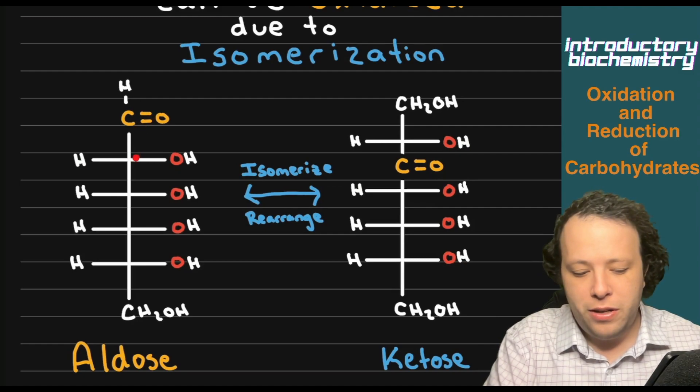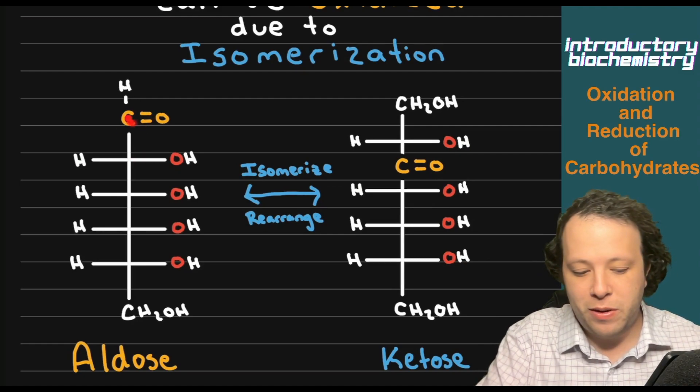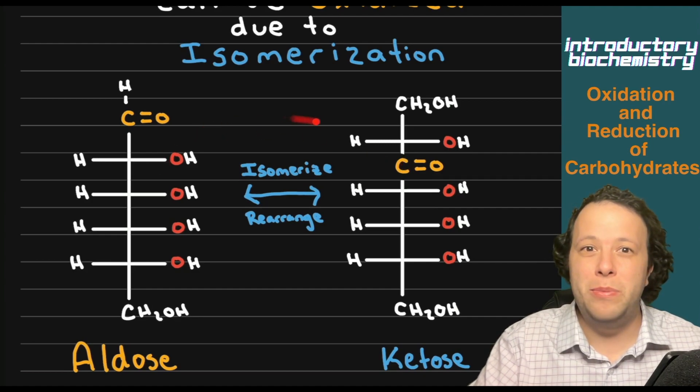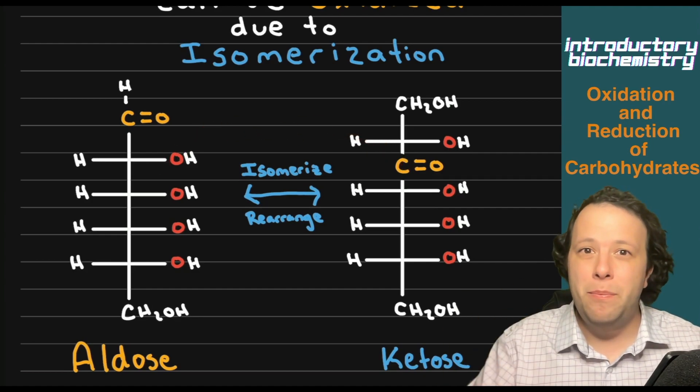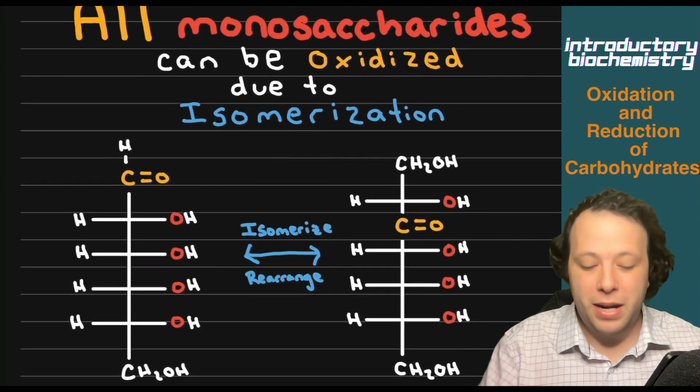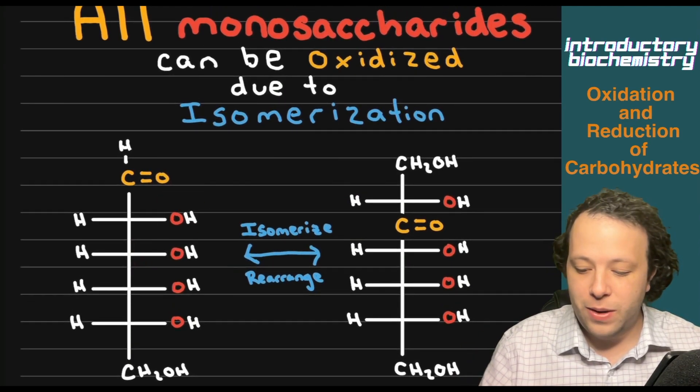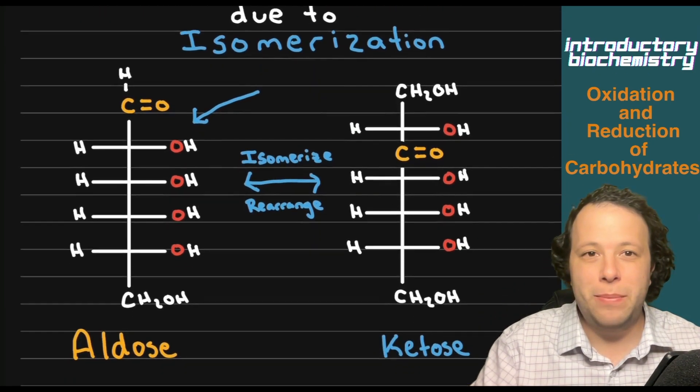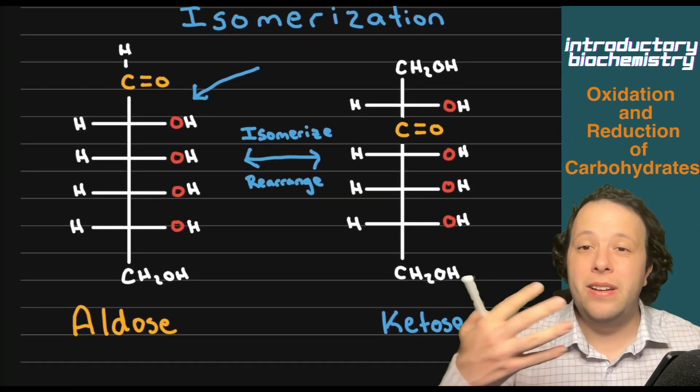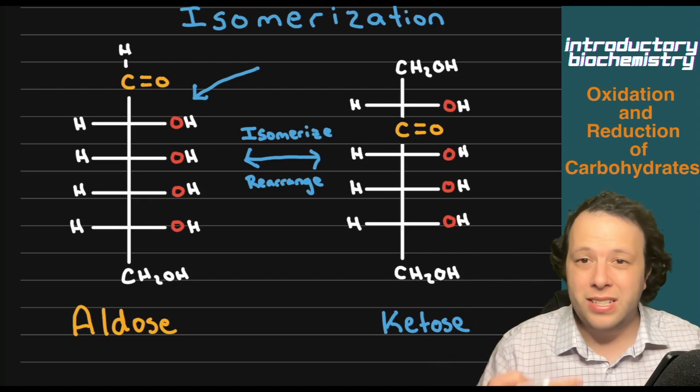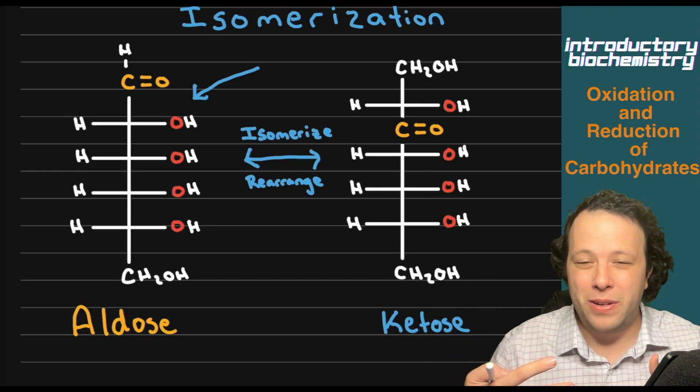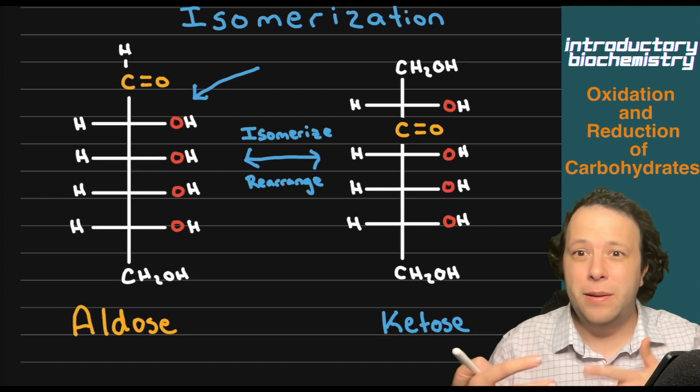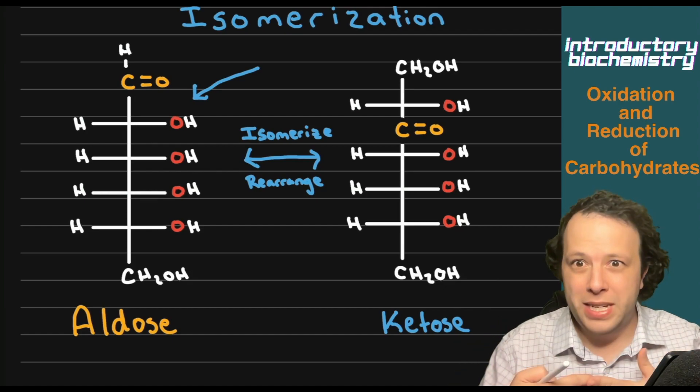The C double bond O can move from carbon number one to carbon number two. When it moves from one to the other, it makes this oxidation possible when it is an aldose. This can happen naturally in your body through proper channels using enzymes, like using an isomerase enzyme, they can be rearranged through metabolism.